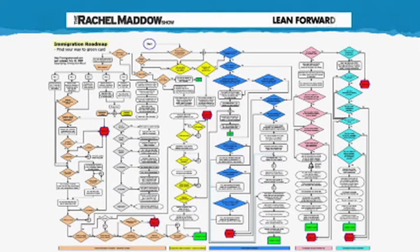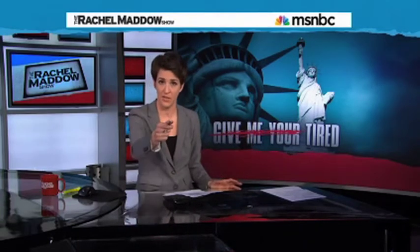Even if you try to not deliberately play up how complex and difficult this system is — even if you don't try to visually obfuscate the paths by which people immigrate to this country, even if you try to make it look as clear as possible — it is still unbelievably impossible. The libertarian magazine Reason tried to map out the same system recently in a legitimately user-friendly way. There are little cartoon characters; it is very well color-coded. You can follow each of these memorable, appealing characters through the process in a way actually designed to help you understand. This is not designed to be visually intimidating, but it ends up being just as damning about the truth.